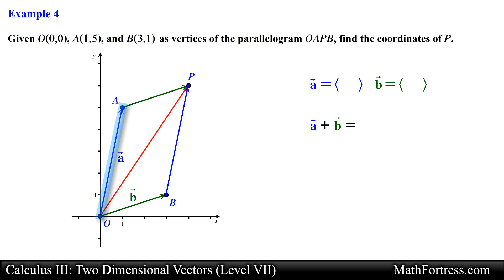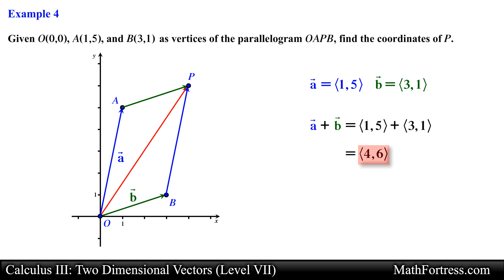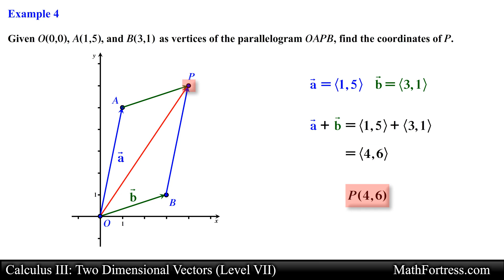We can write vector A in component form as (1, 5) and vector B as (3, 1). Then we go ahead and add these vectors component wise, obtaining the resultant vector equal to (4, 6). Since the resultant vector is in standard position, the components of the vector also match the coordinates of the terminal point, in this case point P. This example illustrates how vectors can be used to solve many types of problems in analytical geometry by drawing vectors and using the properties of vectors to your advantage.